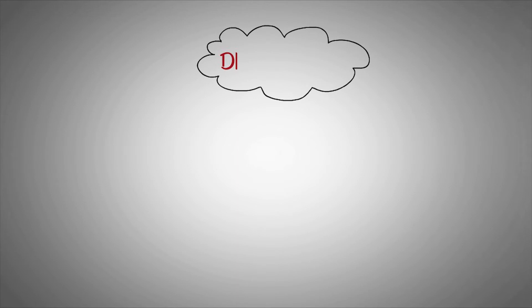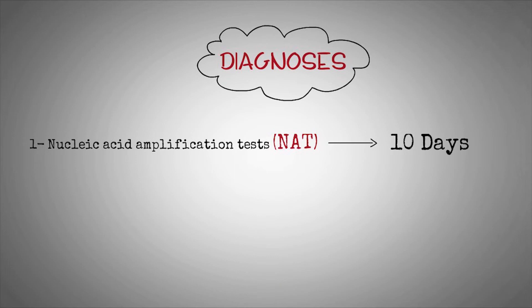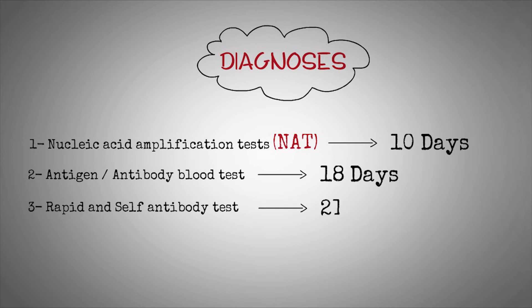To diagnose HIV, several tests may be performed. Nucleic acid amplification tests, sometimes called NAT, can detect HIV infection as early as 10 days after exposure. An antigen or antibody blood test can detect HIV in a blood sample as early as 18 days after exposure. Most rapid tests and self-tests are antibody tests, and these can detect HIV antibodies as early as 21 days after exposure.